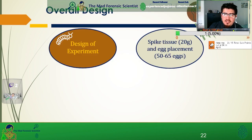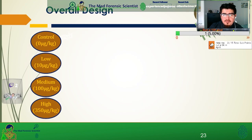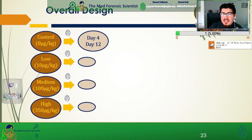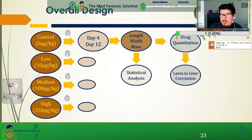For the overall experimental design, 20 grams of liver tissue was spiked with either concentrations of fentanyl or a control, and then 50 to 60 eggs were placed on them. After development, we characterized the physical characteristics as well as the toxicology results. The control group had no fentanyl, the low had 10 micrograms per kilogram, the medium had 100 micrograms per kilogram, and the high had 350 micrograms per kilogram. The homogenized tissue had eggs placed on them, and insects were collected at day four and day twelve, with length, width, and mass evaluated, followed by statistical analysis and drug quantitation.